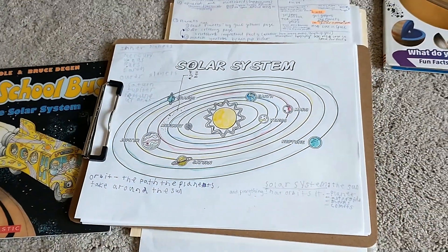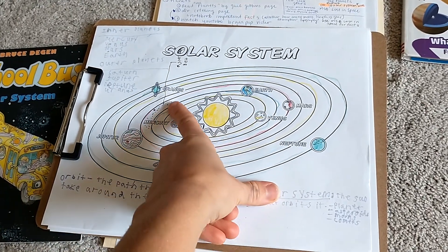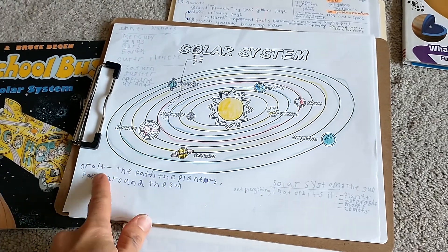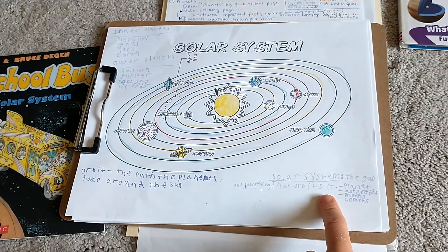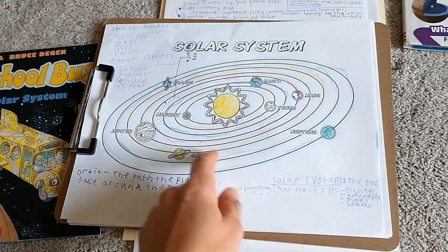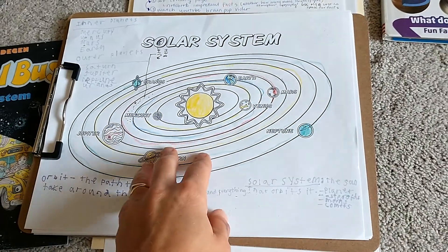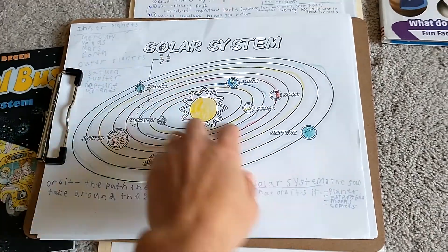So here's my notebooking page. What we did is we talked about each planet and we defined a couple vocabulary words. So we defined orbit what that means. We defined solar system what that means. And then we defined the inner planets and the outer planets. And that was just day one just to introduce the solar system and we talked about that asteroid belt.